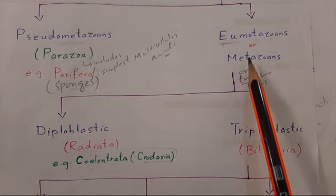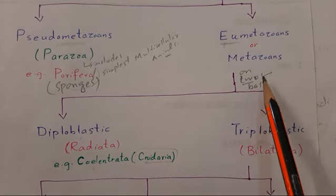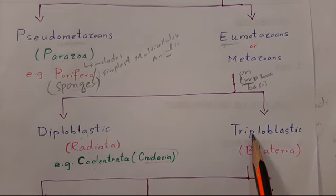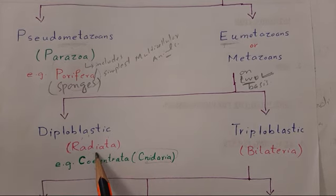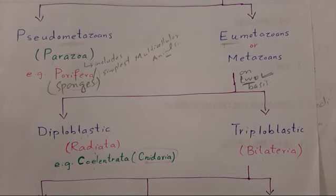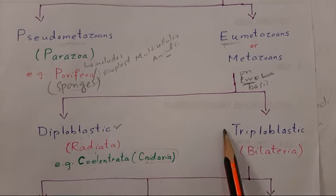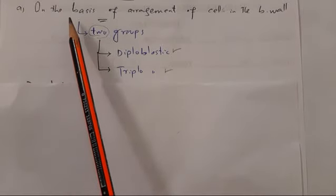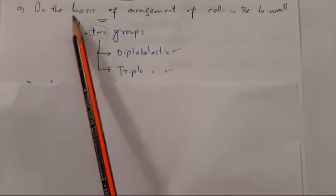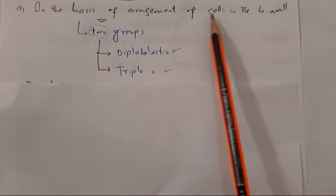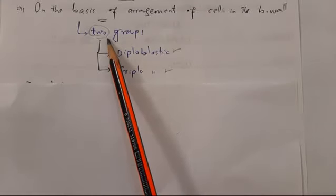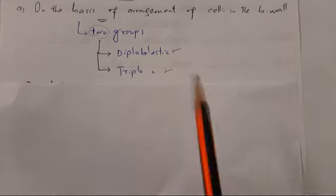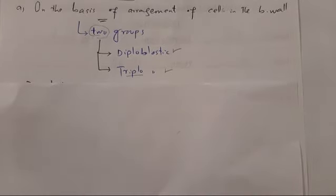This diagram reminds us that Eumetazoa — the true multicellular animals — are divided on two bases: into diploblastic and triploblastic animals based on arrangement of cells in the body wall, and into radiata having radial symmetry and bilateria having bilateral symmetry. Now we will study what is meant by diploblastic and triploblastic animals.